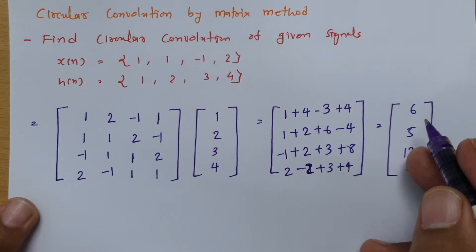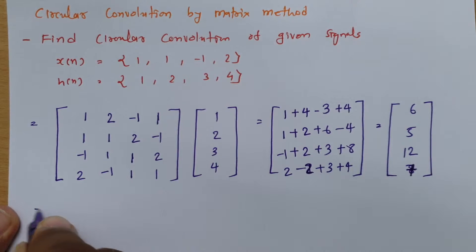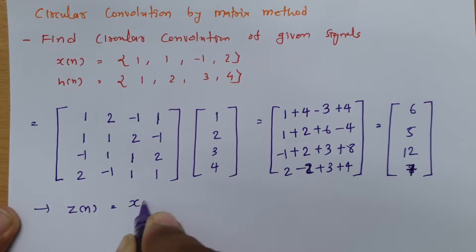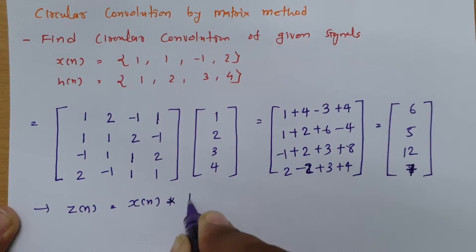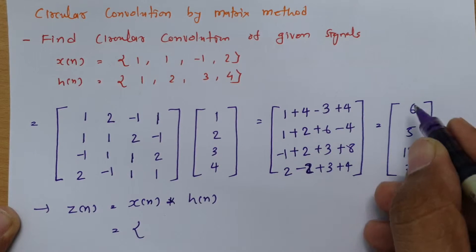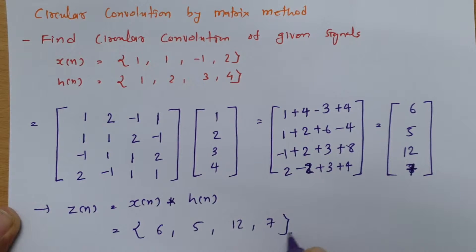So this is the circular convolution answer. If z of n equals x of n circularly convolved with h of n, then the result can be written as 6, 5, 12, 7. So this is the circular convolution answer.